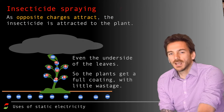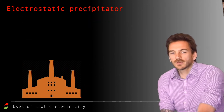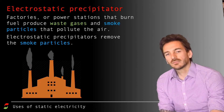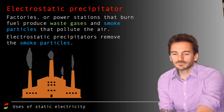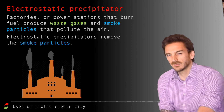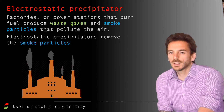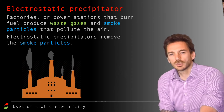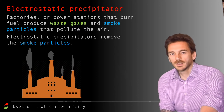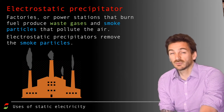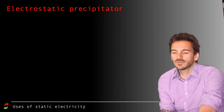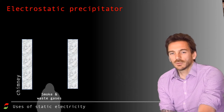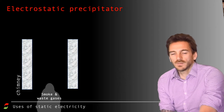Let's have a look at the electrostatic precipitator. These are added to chimneys in factories or power stations where material is burnt that releases not only waste gases but smoke particles. The important thing to realize is that the electrostatic precipitator only removes the smoke particles - it doesn't remove waste gases like carbon dioxide or sulfur dioxide. It removes the dust particles and dirt in the smoke. Here we have a cross-section of a chimney with smoke and dust particles going up through it - normally they would pass straight up and go out into the atmosphere and pollute.